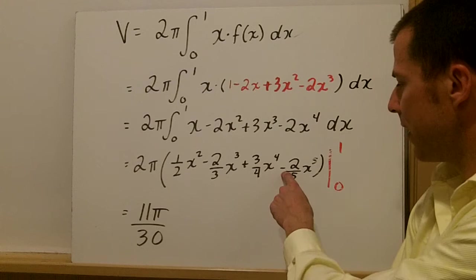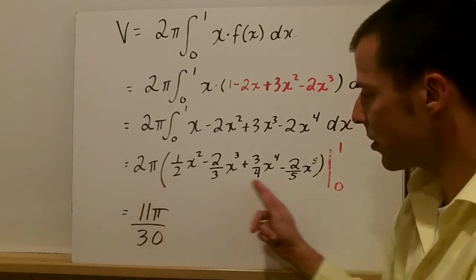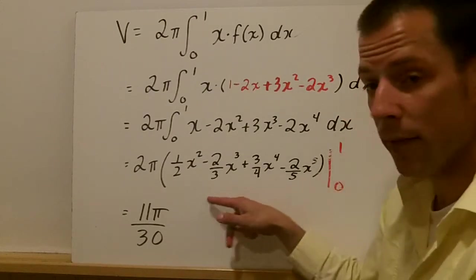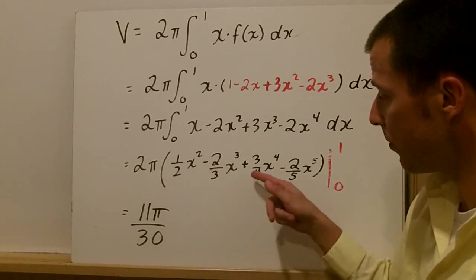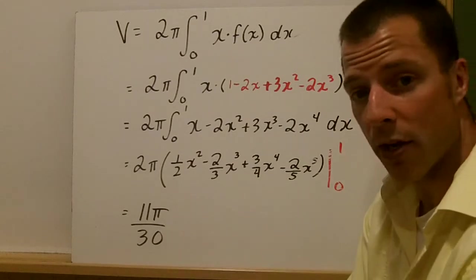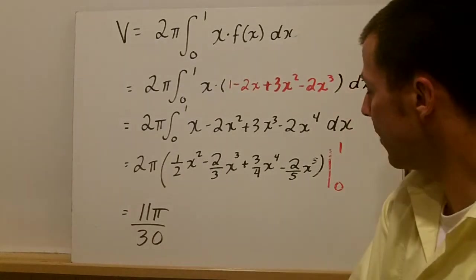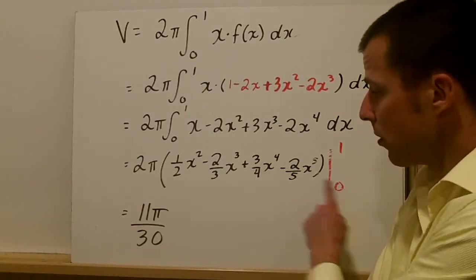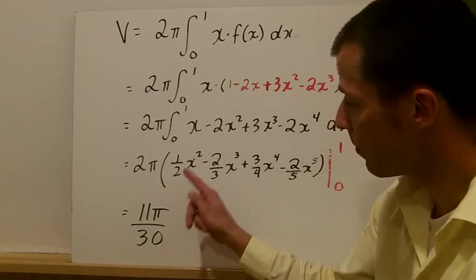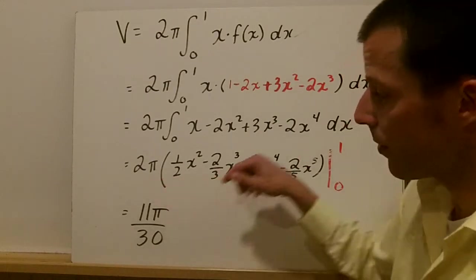The last term is negative, or minus 2 fifths x to the fifth. We have 2π times this whole quantity, and we have to evaluate from 0 to 1. We can plug 1 in and basically you're adding 1 half minus 2 thirds plus 3 fourths minus 2 fifths. If you combine all those, you get 11π over 30. We don't have to put 0 in because each of these terms has an x, so we're going to subtract off 0. Just plug 1 in for x, find out what that fraction is, and multiply it by 2π.